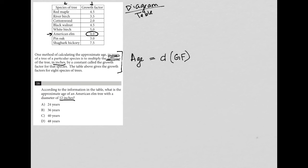So then this should be a very straightforward question. So the age of this American elm tree is equal to its diameter in inches, which is 12, times its growth factor, which we found from the table, which is four, and 12 times four is equal to 48. And therefore, the correct answer is choice D.